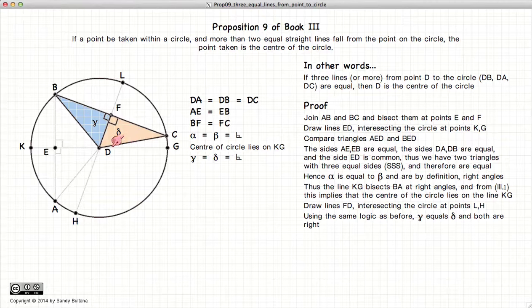BF is equal to FC, DC is equal to DB, three sides equals three sides, so gamma is equal to delta.